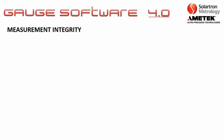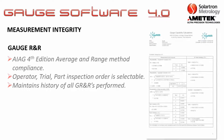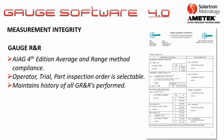For measurement integrity, there is also Gauge R&R. This software package is AIA G fourth edition average and range method compliant. You can perform Gauge R&R for operator, trial, and part inspection as you choose, and it also maintains the history of all Gauge R&R's performed.